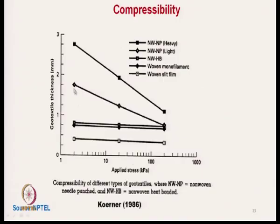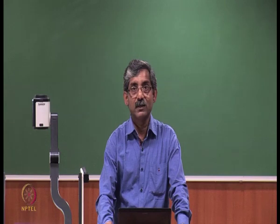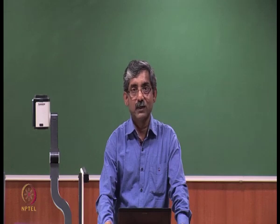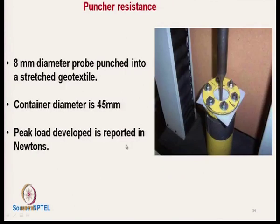This is a typical graph of applied pressure versus geotextile thickness showing compressional characteristics. The top curve shows heavier nonwoven needle-punched geotextile, and the lower one shows lighter needle-punched geotextile — both exhibit very high compressibility. In contrast, woven slit film geotextile has the least compressibility.